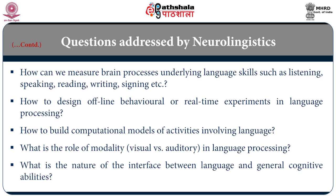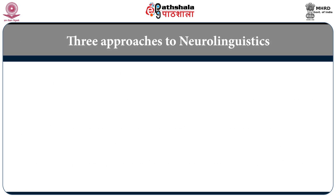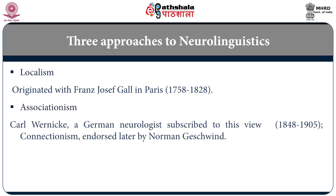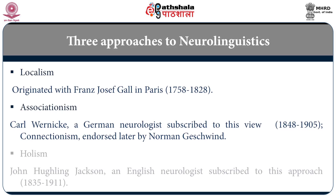I will focus on a few points, especially giving some idea about the history of development of neurolinguistics across three major approaches. Starting with localism, this approach originated with Franz Joseph Gall in Paris, 1758 to 1828. Then associationism — one of the main persons associated with it is Karl Wernicke, a German neurologist, born in 1848 and died in 1905. These ideas of associationism eventually became connectionism much later. The third approach is holism, associated with Hewling Jackson, an English neurologist, 1835 to 1911.